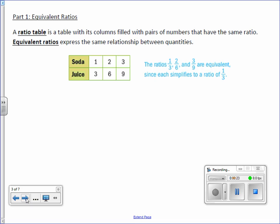Equivalent ratios express the same relationship between quantities. The ratios 1 to 3, 2 to 6, and 3 to 9 are equivalent since each simplifies to a ratio of 1 to 3.